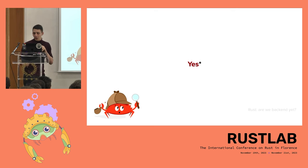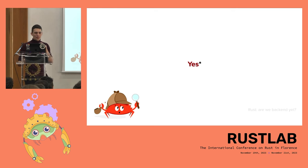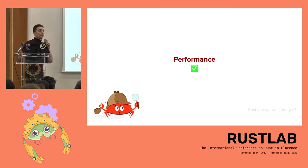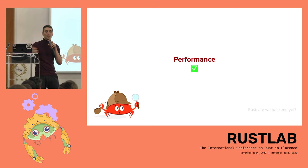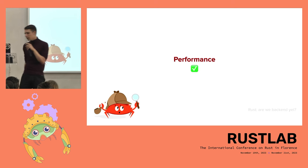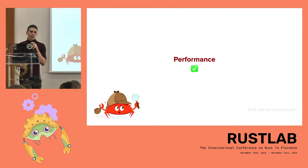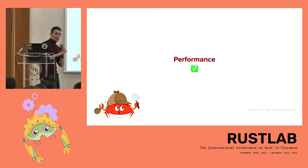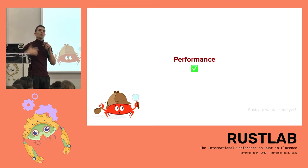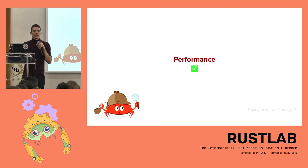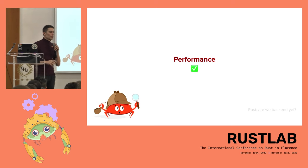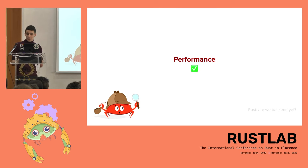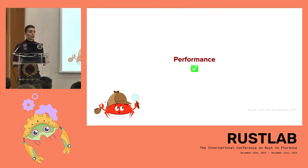Is Rust a good language for backend development? Yes, there are some ifs and buts. First and foremost, Rust is a performance language. Rust doesn't have garbage collection, which allows you to have very fast systems and, most importantly in many applications, very predictable systems — systems that always take more or less the same time to do the same operations. When operating software in production, predictability is actually a more important property than raw speed.